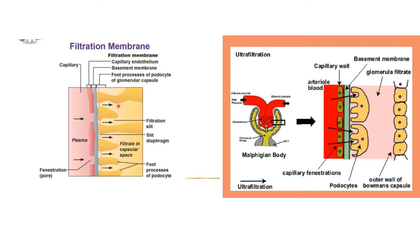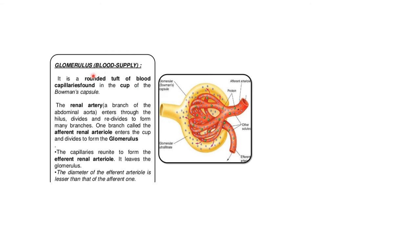The filtration membrane consists of capillary endothelium, then the basement membrane, then the foot processes of the podocytes of the glomerular capsule, and filtration takes place through this. The glomerulus is a rounded tuft of blood capillaries found in the cup of Bowman's capsule. The renal artery enters through the hilum and divides; one branch called the afferent renal arteriole enters the cup and divides to form the glomerulus. The capillaries then reunite to form the efferent renal arteriole, which leaves the glomerulus.